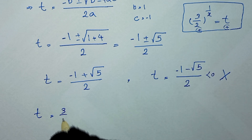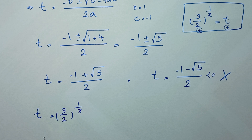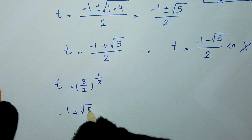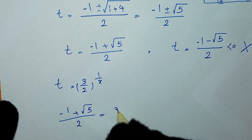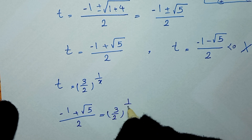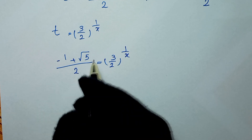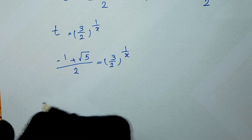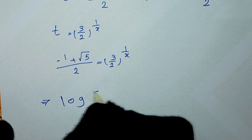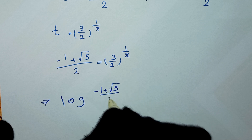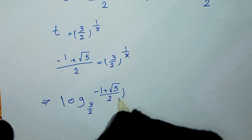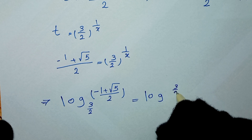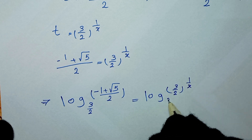Since t = (3/2)^(1/x), we write: (3/2) to the power of 1/x equals (−1 + √5) / 2. Next, we apply the logarithm with base 3/2 to both sides: log base (3/2) of [(−1 + √5) / 2] equals log base (3/2) of [(3/2)^(1/x)].